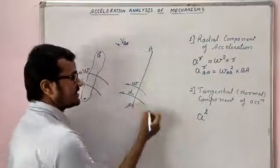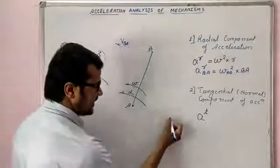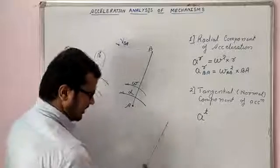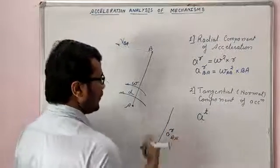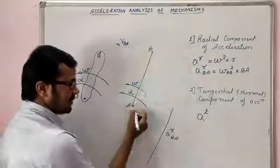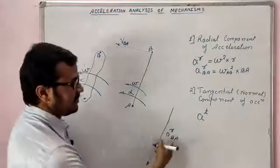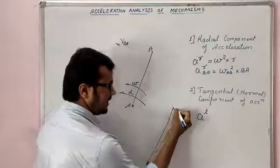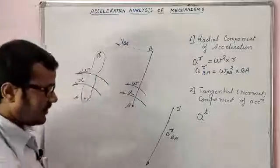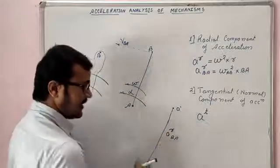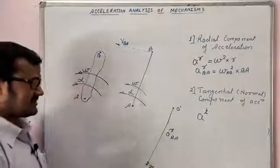The direction of the radial component is parallel to the link and always directed towards the fixed point. So when drawing the acceleration diagram, I start from a point — let's call it A-dash — and draw a vector parallel to the link AB directed towards the fixed point A. The end of this radial vector is named point X, representing the radial component of acceleration of B with respect to A.